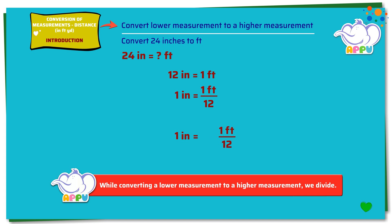Multiplying both sides by 24, we get 24 times 1 inch equals 24 times 1 foot divided by 12. 24 times 1 inch equals 24 inches. 12 divides 24 two times, so 24 inches equals 2 feet.